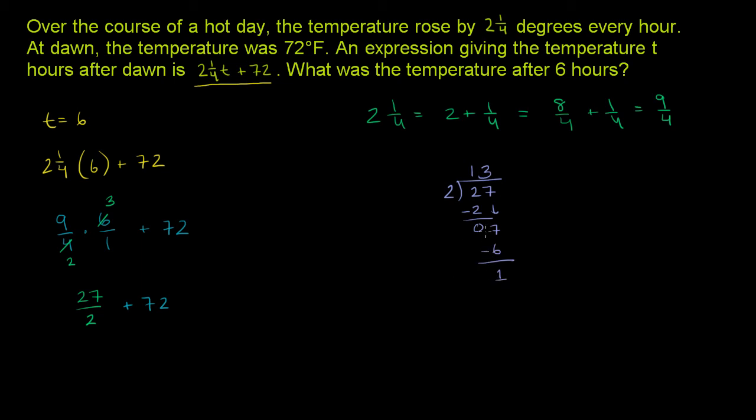We could keep going and turn this into a decimal, but we just want to turn it into a mixed number. So this becomes right over here, this part right over here, is 13 with a remainder 1. So it's 13 and ½ plus 72.